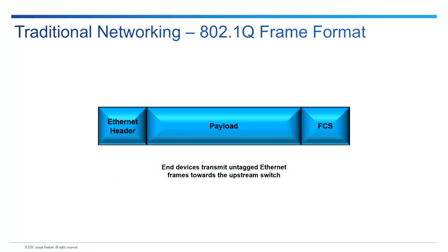Let's peel the layers back and talk about what we already know — the 802.1Q frame format. This is a very simplified version of what's in the Ethernet header and so forth. This is basically what happens when you're sending something in 802.1Q. A host is transmitting up to the switch. The frame is a native Ethernet frame — untagged — with FCS and an IPv4 or IPv6 packet payload.